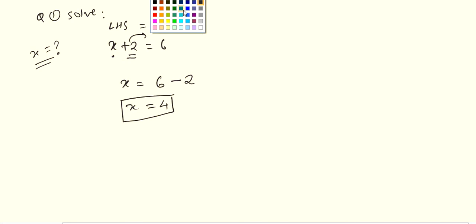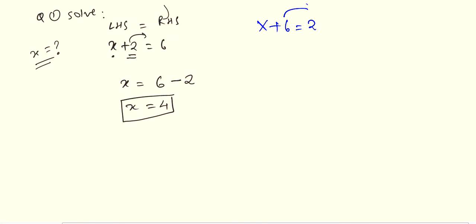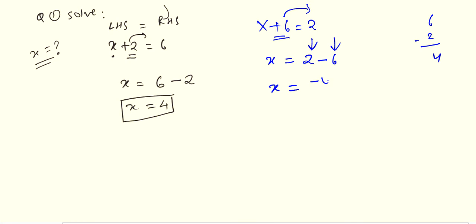Question number 2: x plus 6 equals to 2. Transpose this 6 to the right hand side. So x equals to 2 minus 6. Since 6 is a bigger number compared to 2, and we are subtracting, the answer will be minus 4. So x equals to minus 4.